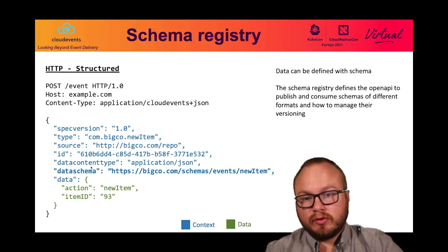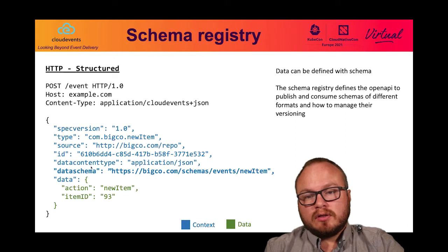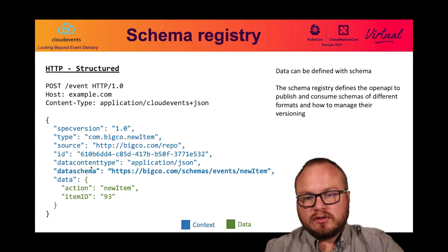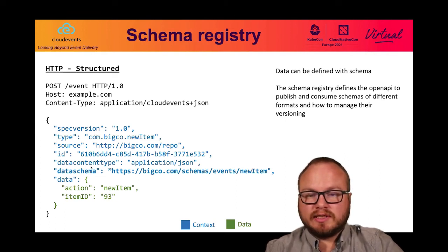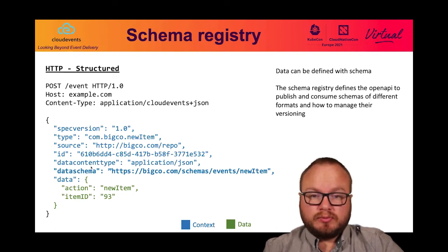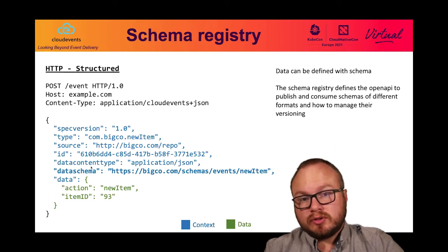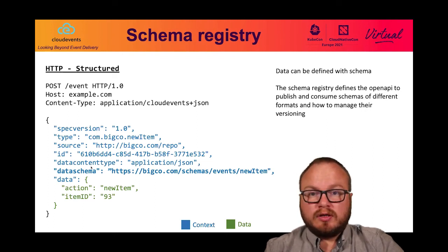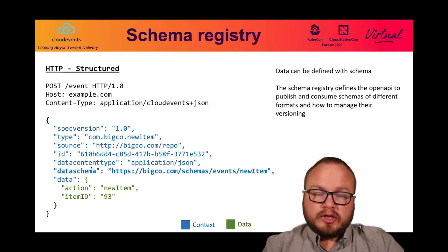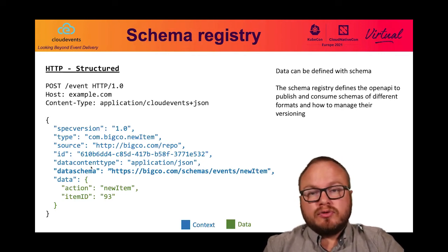Finally, the Schema Registry. As we see here in a sample event, there is a data schema attribute. The data schema defines the structure of what's inside the data. That means we will need to be able to publish schemas in different formats and different versions. So the Schema Registry aims to define how you consume and publish schemas, publicly or privately, through a schema registry.